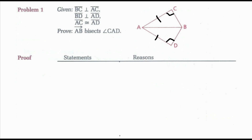Remember the hypotenuse is the longest side of the triangle — it's the side opposite the right angle, which would be side AB. In my two triangles, AB is a shared side. So I can say that AB is congruent to itself by reflexive property, which would give me my two triangles congruent. Now I can use CPCTC to show that angle CAB is congruent to angle DAB, and then I can use the definition of angle bisector to tell me that ray AB bisects angle CAD.